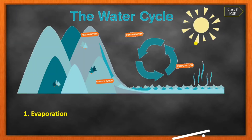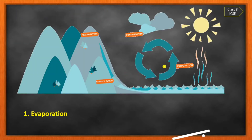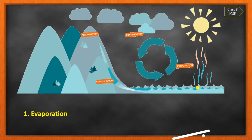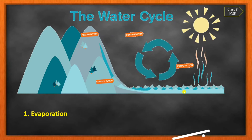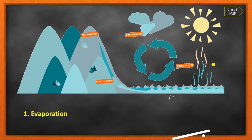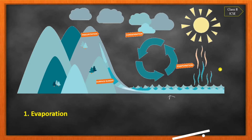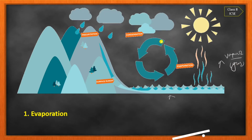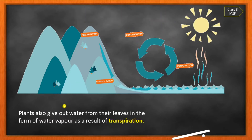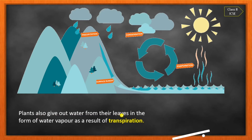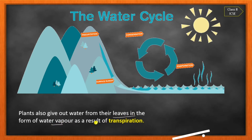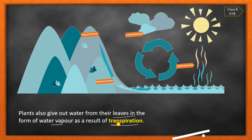You can see in this diagram what is happening in the water cycle in 4 stages. The first stage is evaporation — on the surface of the Earth, due to heat, liquid water changes to the vapour state and goes into the atmosphere. Plants also give out water from their leaves in the form of water vapour, and that process is called transpiration.